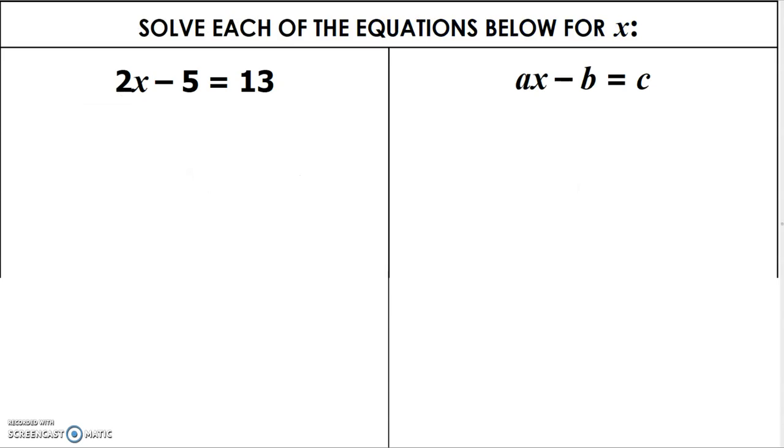We are going to compare these two equations. We will solve each one of the equations below for x. In this first equation, this is one we are used to seeing. So we add 5 to both sides, get 2x equals 18, divide by 2 so that x is 9. Here we actually have a value for the variable.